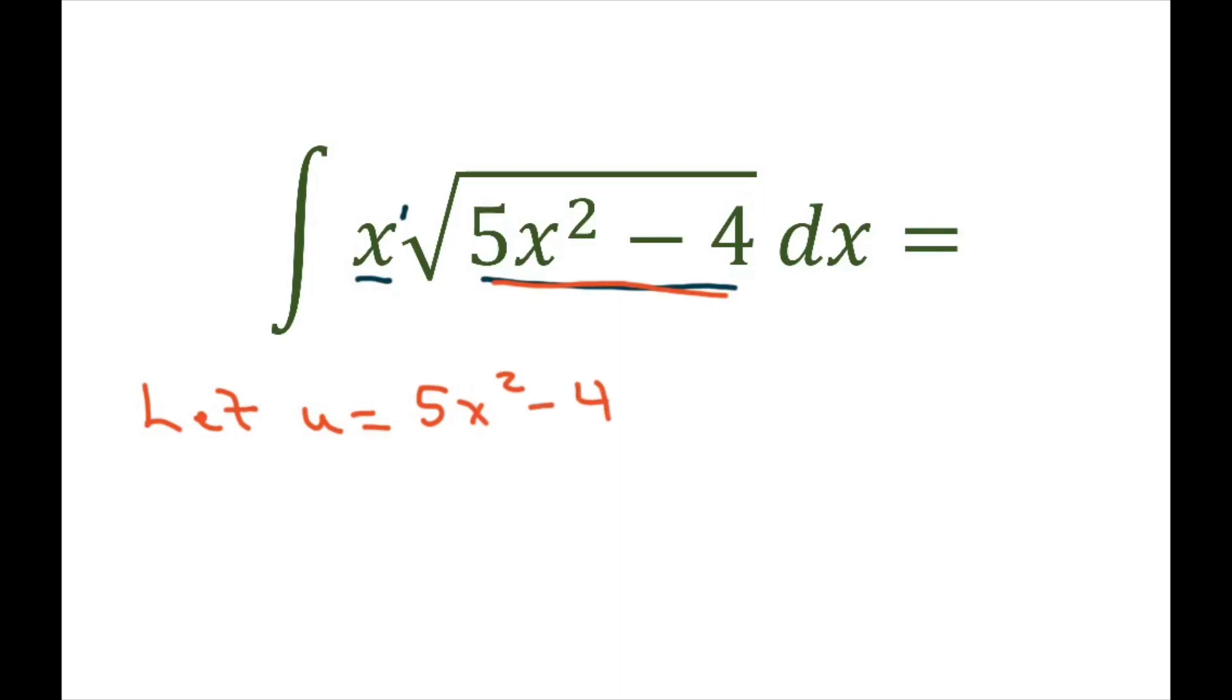And when you take the derivative of u with respect to x, you're going to get 10x dx. So now I'm going to divide both sides by 10, and I get 1 tenth du equals x dx.